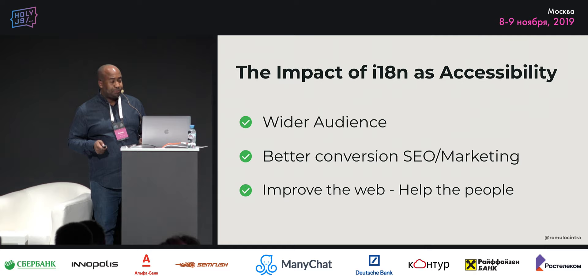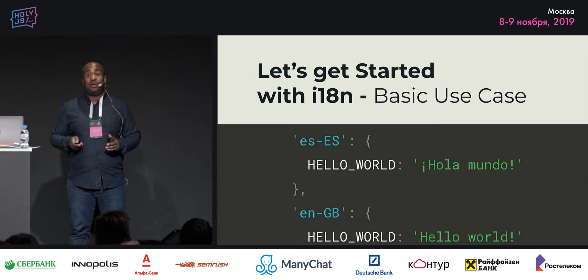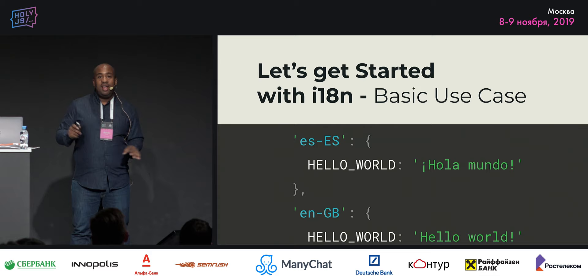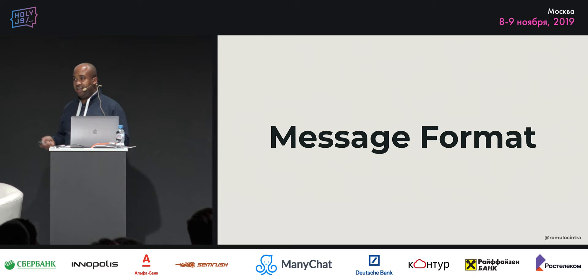Let's look at some code. Let's get started with the basic part. We need to translate our strings — that's the basic case. When you start translation, you have your variable and hello world is hello world. But we have message format for that. In different languages, in C, in Java, we have message format. But what is message format in JavaScript?